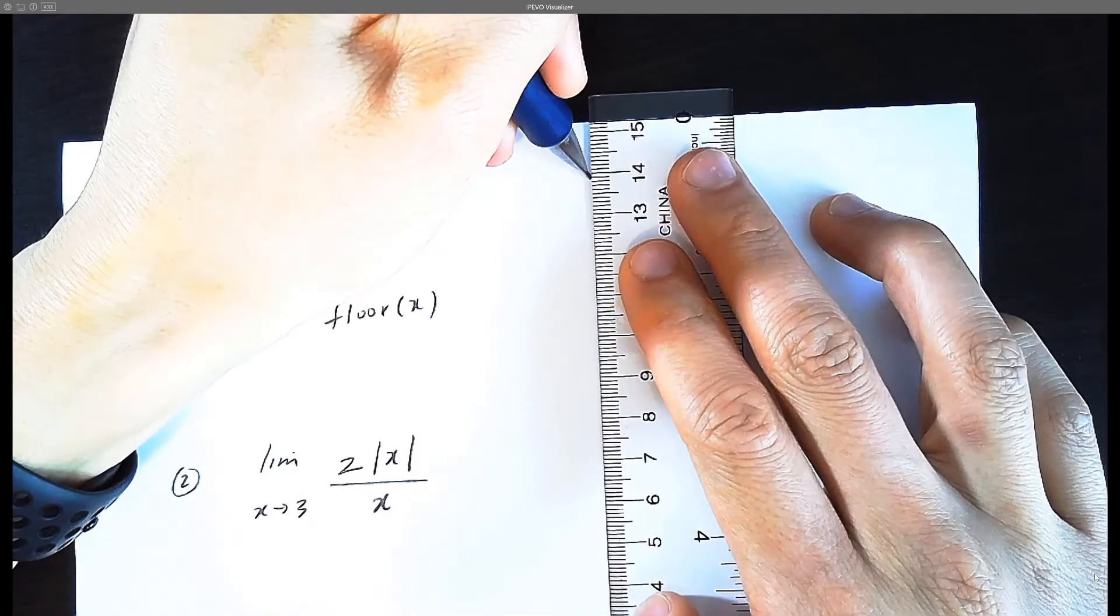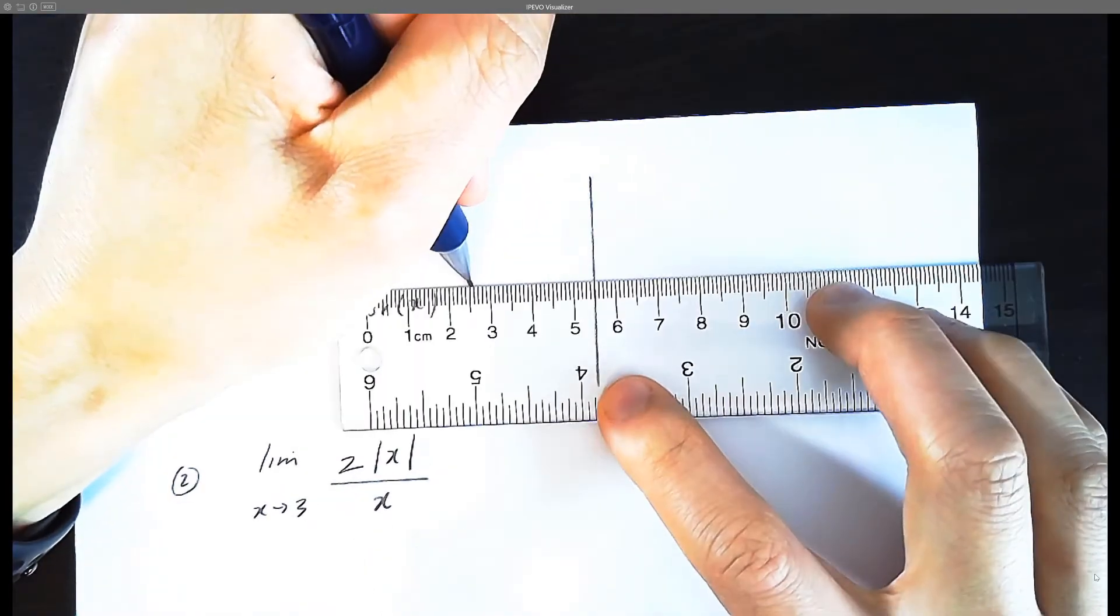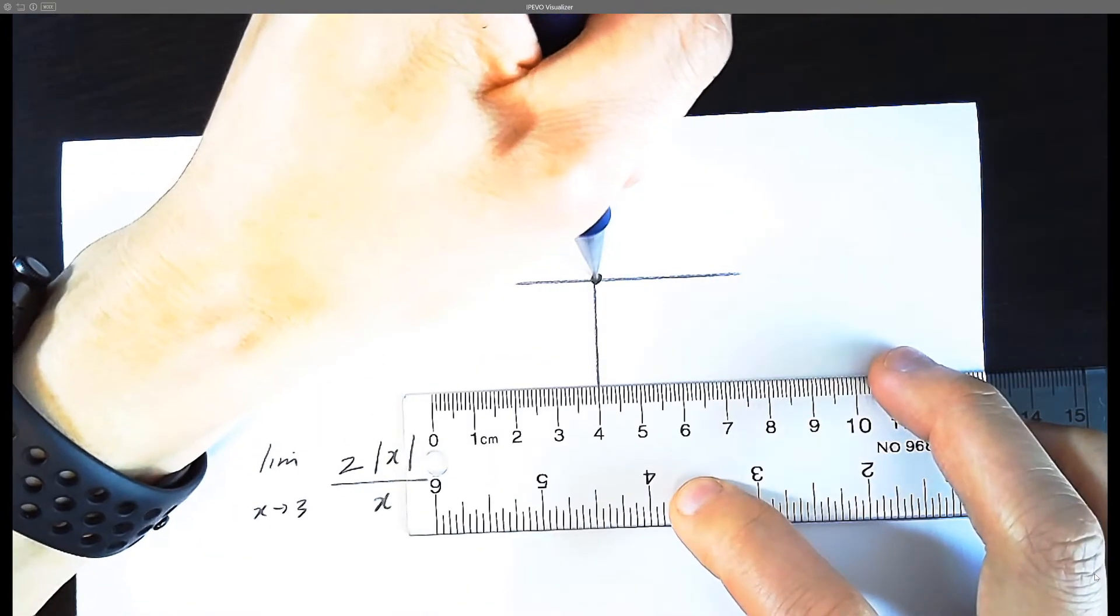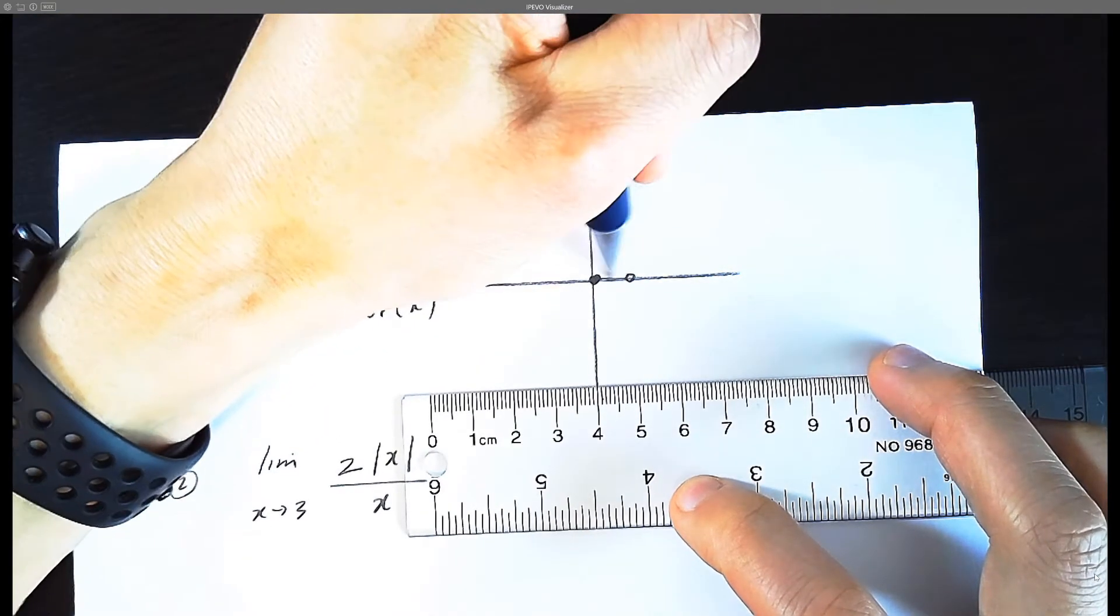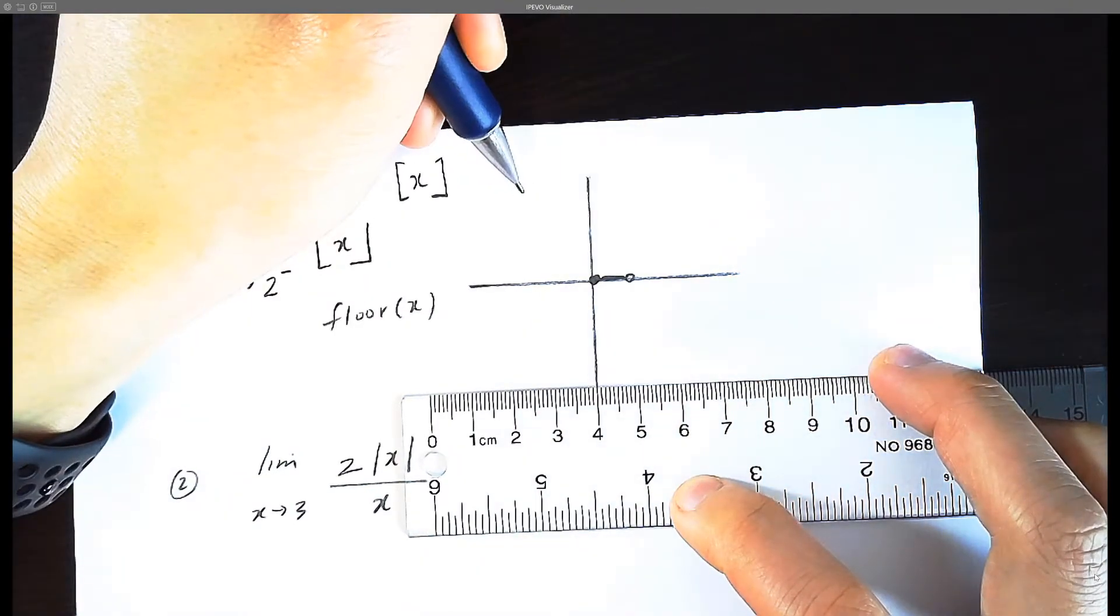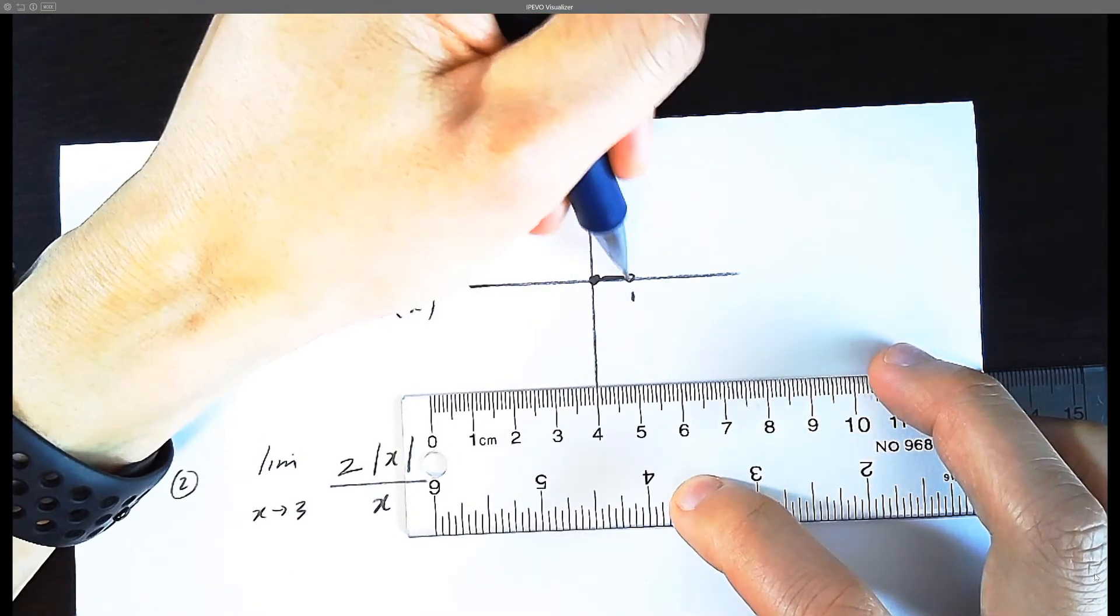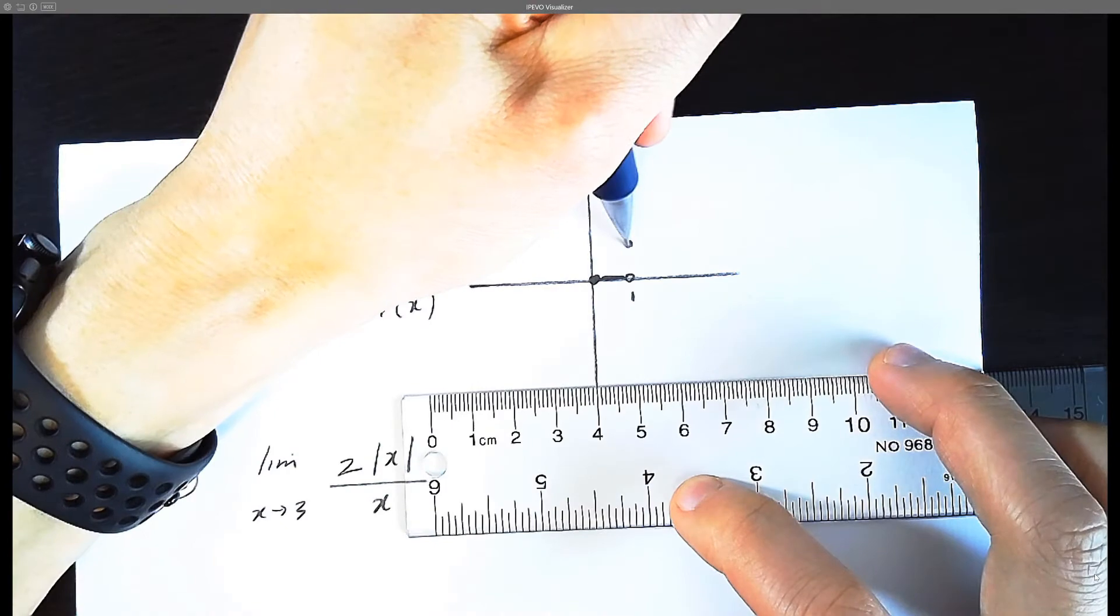And the key to memorizing this graph is to know that it starts at zero. It's a solid dot at zero. And it goes one unit to the right, and it's a solid line there. And it's actually a hollow circle there. And then you step up, upwards.